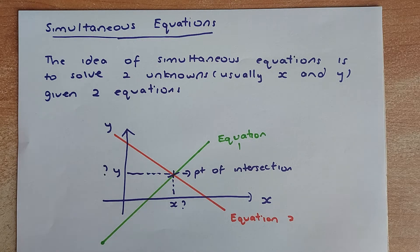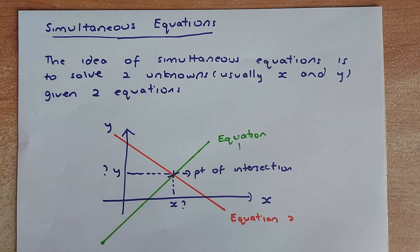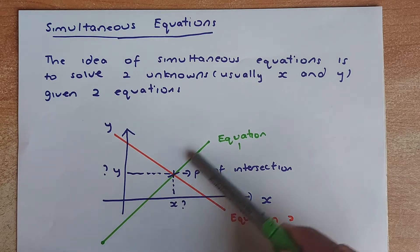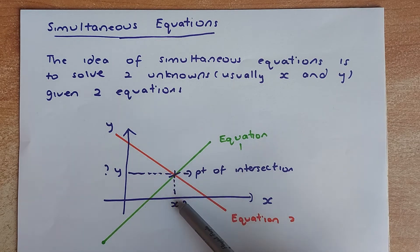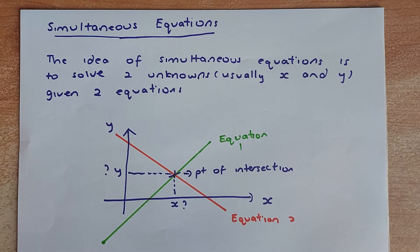What is a Simultaneous Equation? The idea of simultaneous equations is to solve for two unknowns. Usually the unknowns are X and Y when you are given two equations. For example, the first equation might be a line shown graphically, and equation 2 is another line. The objective is to find the point of intersection — what is the value of X and what is the value of Y? So in simultaneous equations, you have to find both the values of X as well as Y.